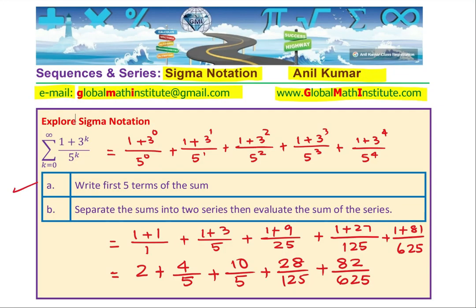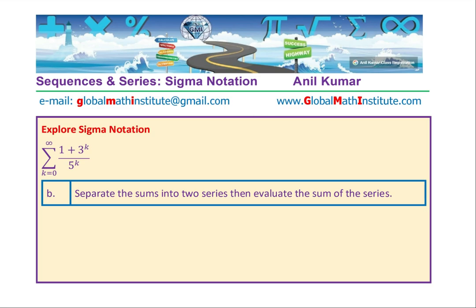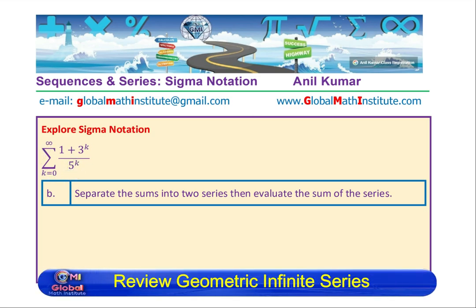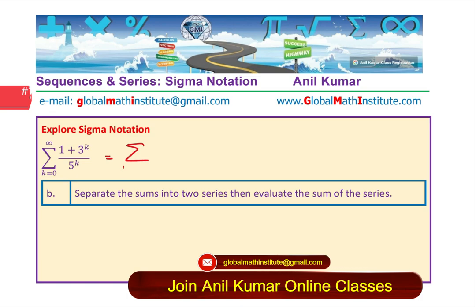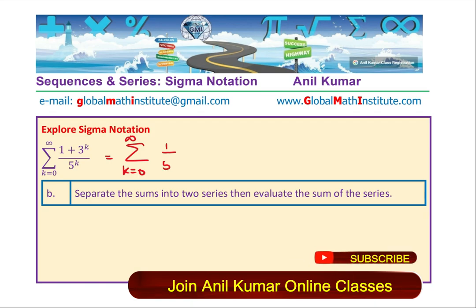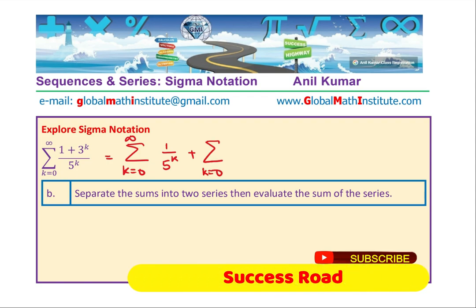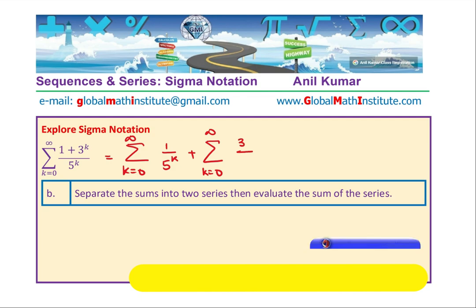So let's continue and do part B now. So again, we will work with this series, split it into two parts, and that is the way how we should be doing to find the sum of the infinite series. So as you can see, we could write this as sum of the series where k equals 0 to infinity, 1 over 5 to the power of k, plus the other series, which is k equals 0 to infinity, 3 over 5 both to the power of k. So we could write like this.